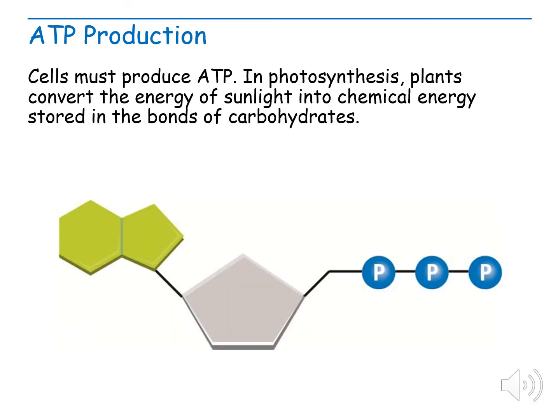Cells must produce ATP. In photosynthesis, plants convert the energy of sunlight into chemical energy stored in the bonds of carbohydrates.